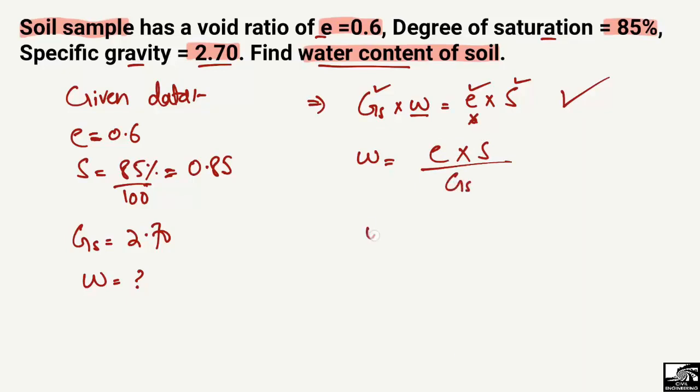Substituting the values: e is 0.6, degree of saturation is 0.85, and specific gravity is 2.70. If we calculate, it comes out to be 0.188.